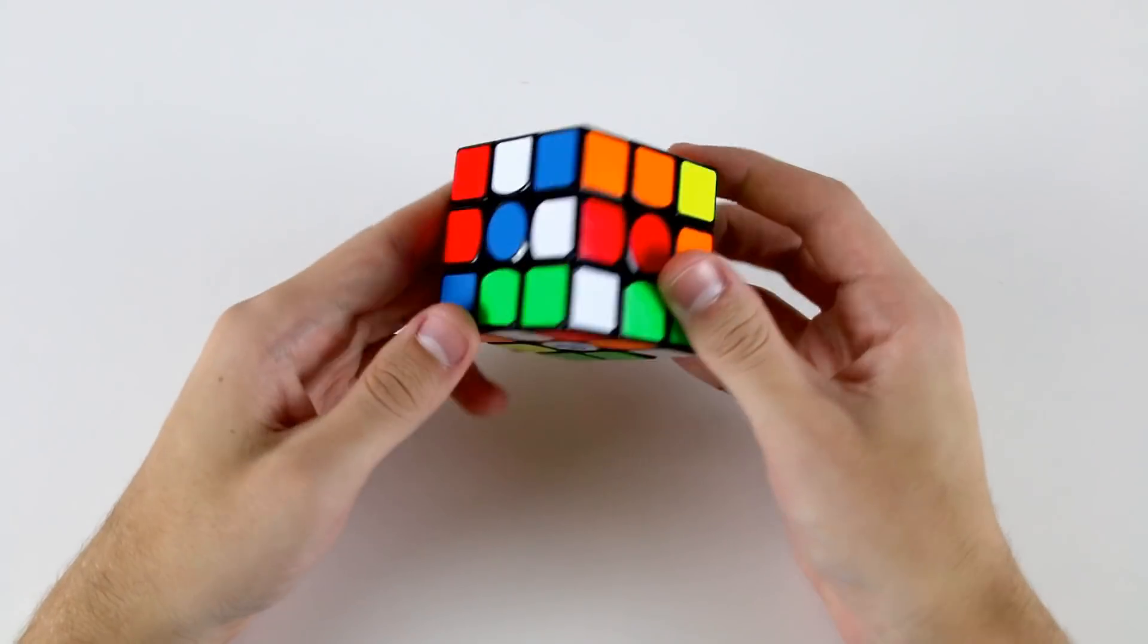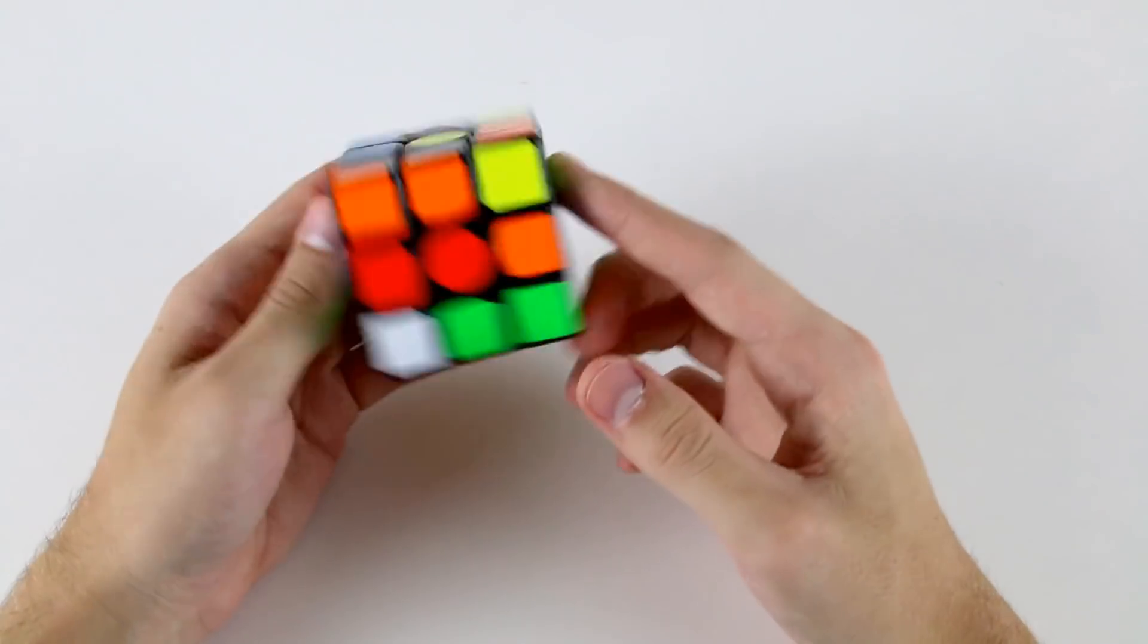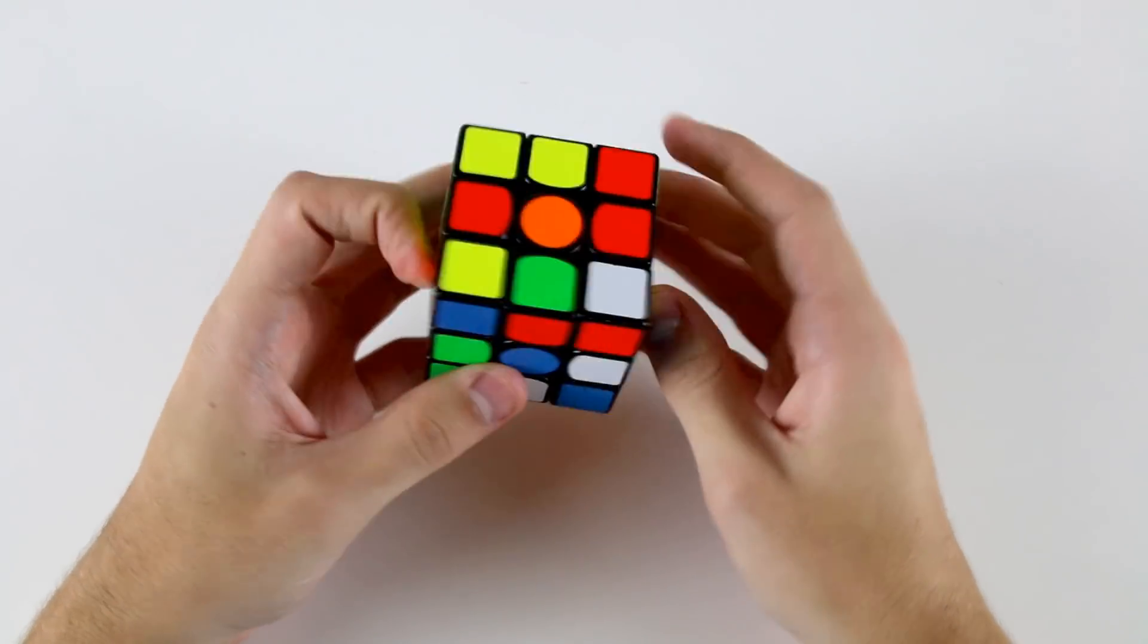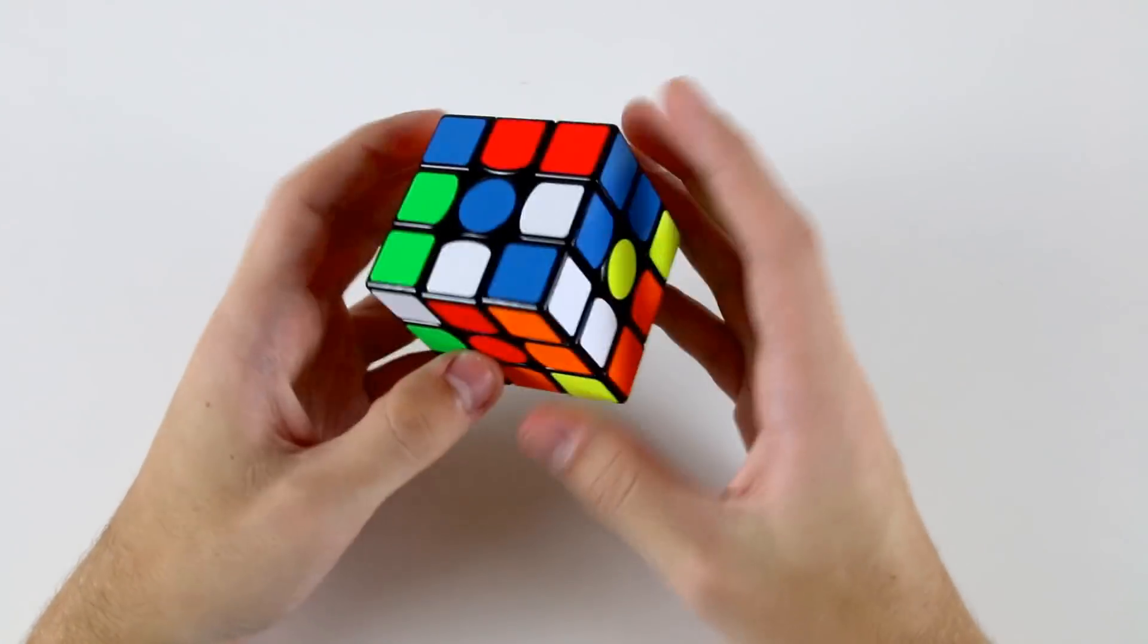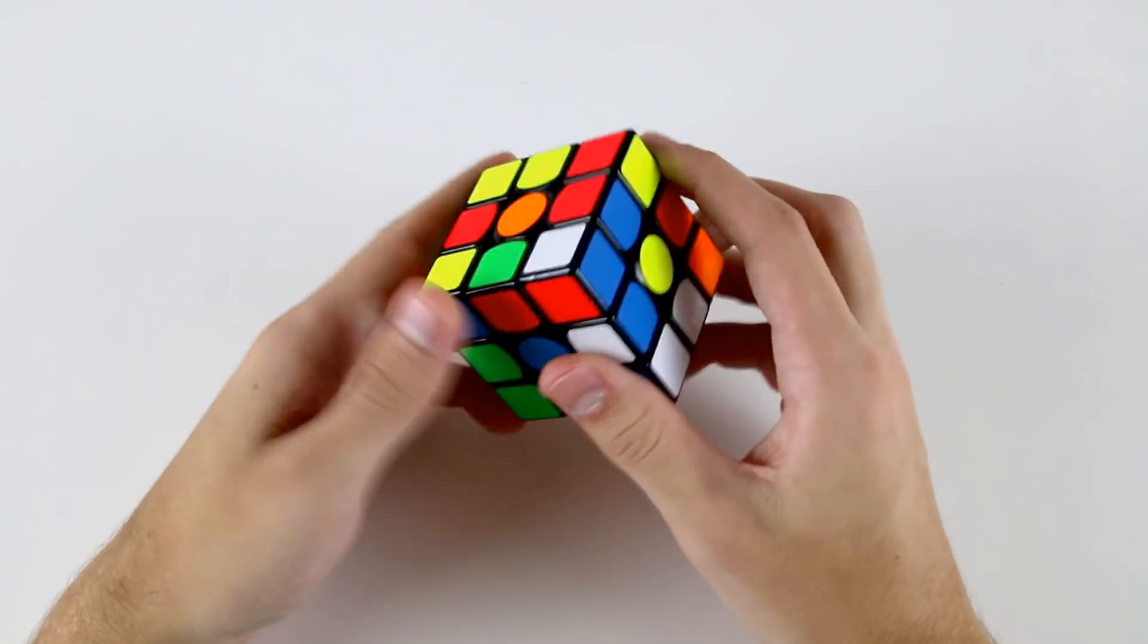What have we got in this scramble? We've got a white cross which is okay, a red cross which is also okay, and there's no other oriented edges on any side.